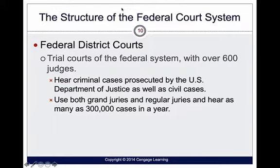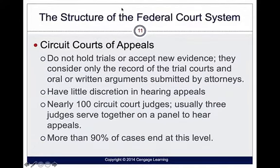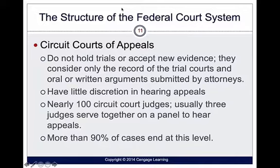The next level up in the federal court system above the district courts is the Circuit Court of Appeals. You can't just appeal a case because you lost — you have to appeal on the basis that there was some type of constitutional violation. They don't hold trials or accept new evidence; they only consider whether the trial court was acting within the framework of the Constitution. There are nearly 100 circuit court judges who usually serve on three-judge panels, and most cases end at this level.